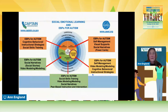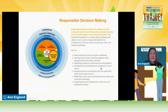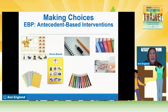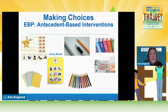Now we're going to look at the responsible decision-making part of SEL. These are the EBPs for that area. Responsible decision-making is how to make caring and constructive choices about personal behavior and social interactions across diverse situations. We all are on a journey to learn how to do this over our lifetime—it's a skill learned through trial and error. There is an evidence-based practice called antecedent-based interventions, and two of the hallmark aspects are high-interest activities and making choices. We know that the more choices students have in classrooms, we can see a direct decline in behavioral problems.